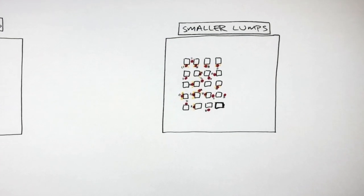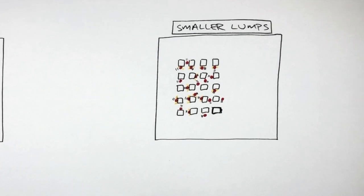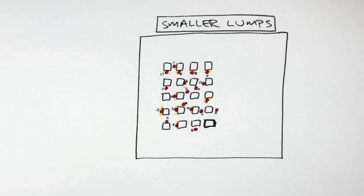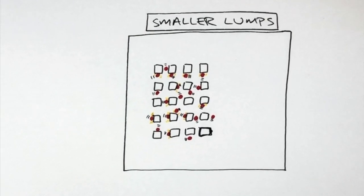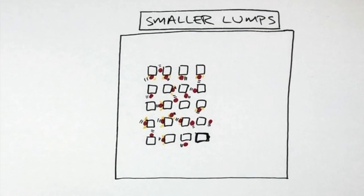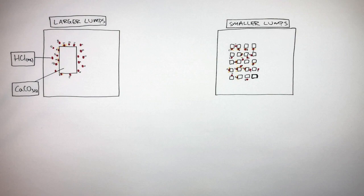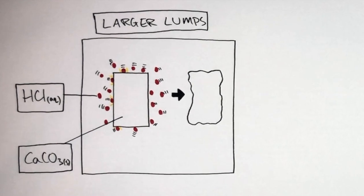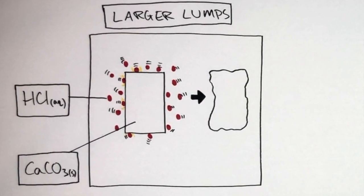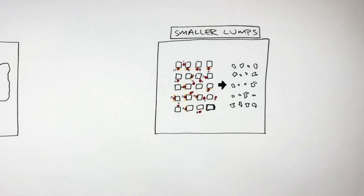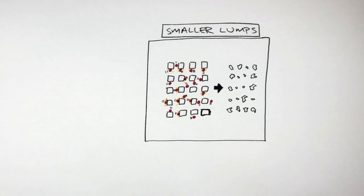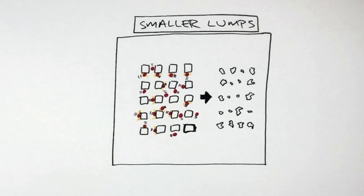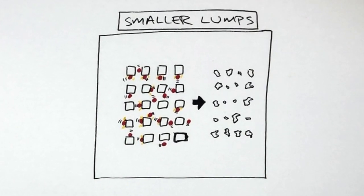There is more of the calcium carbonate exposed. Therefore, there are more points of contact between the calcium carbonate and the hydrochloric acid molecules. This allows there to be a higher frequency of collisions, so there is a higher chance of successful collisions. After a certain amount of time, only the outer surface of the large lump of calcium carbonate has reacted, whereas with the smaller lumps, although only the outer surface of each small lump has also reacted, because more of the calcium carbonate was exposed, more successful collisions took place.